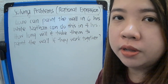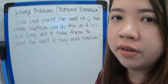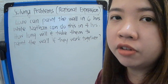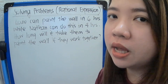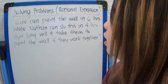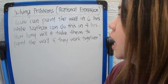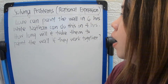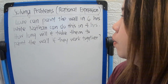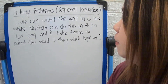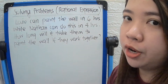In this video, I will teach you how to solve problems involving rational expressions. For example, Louis can paint the wall in 6 hours, while Nathan can do this in 4 hours. How long will it take them to paint the wall if they work together?